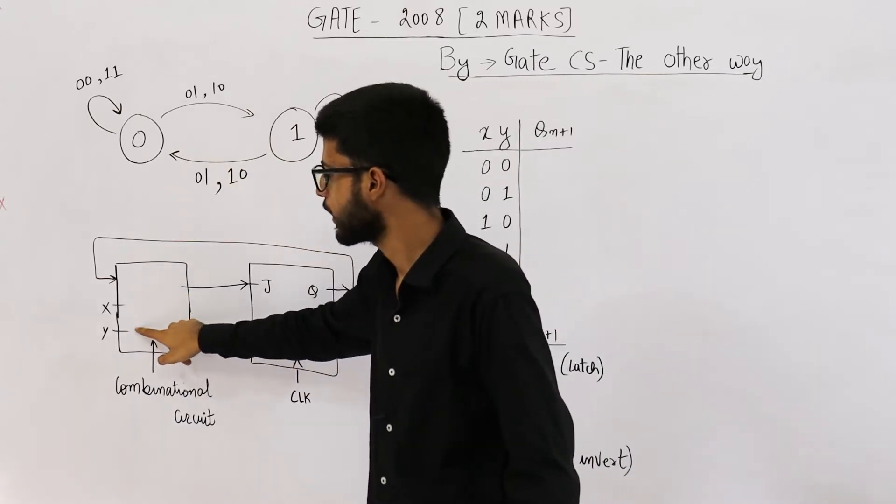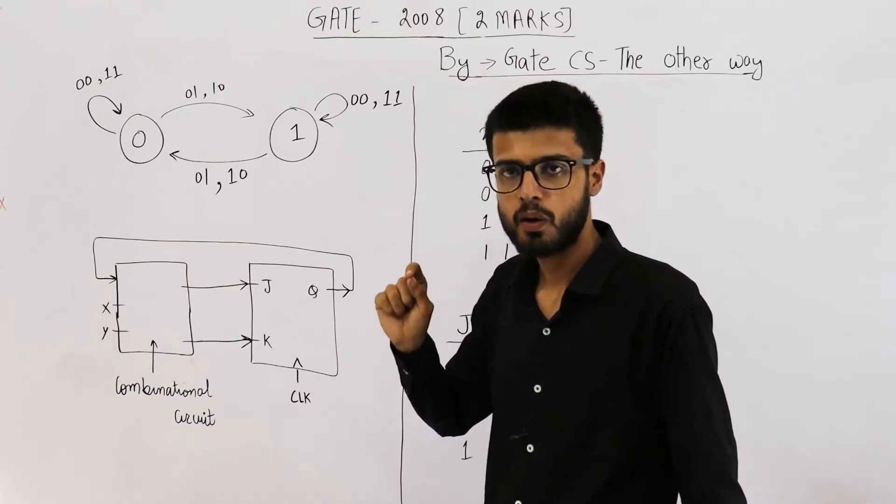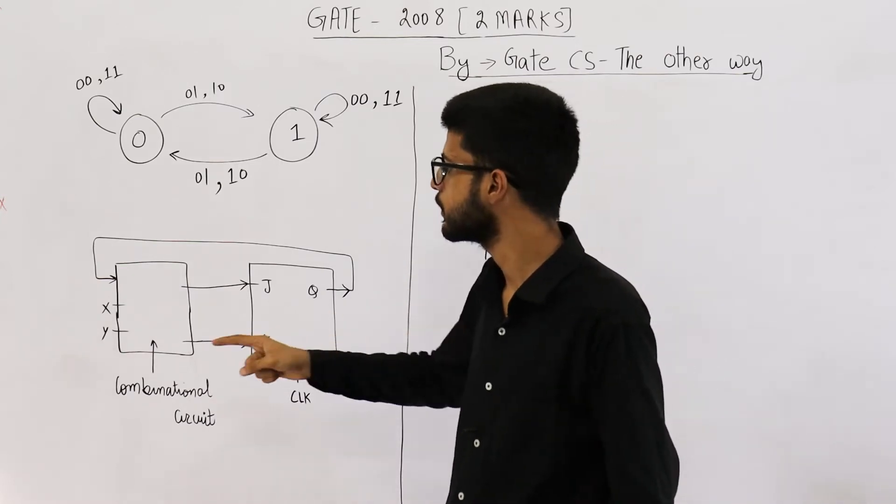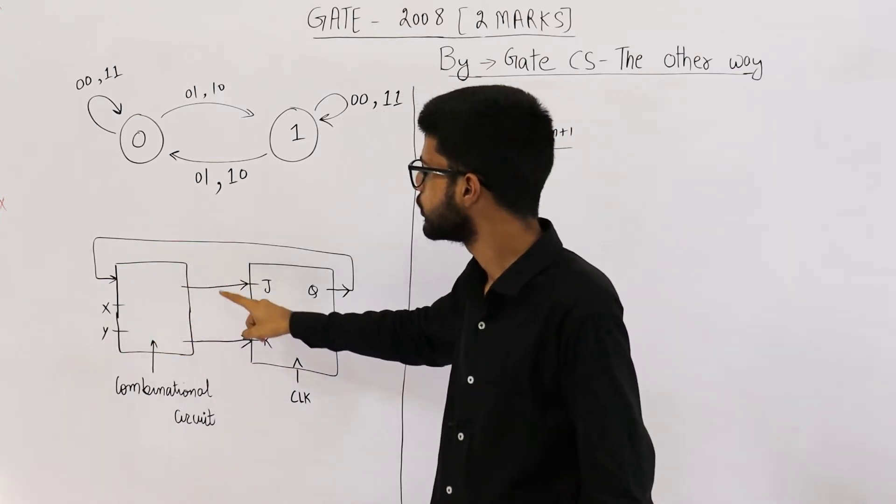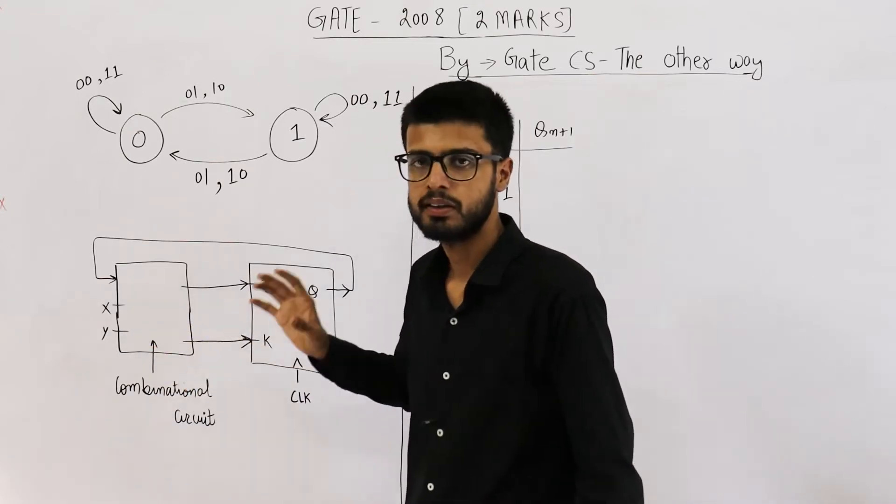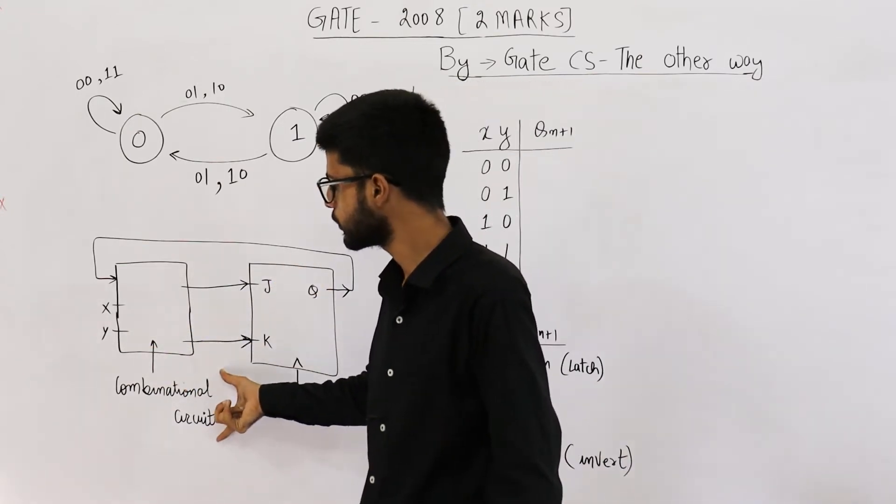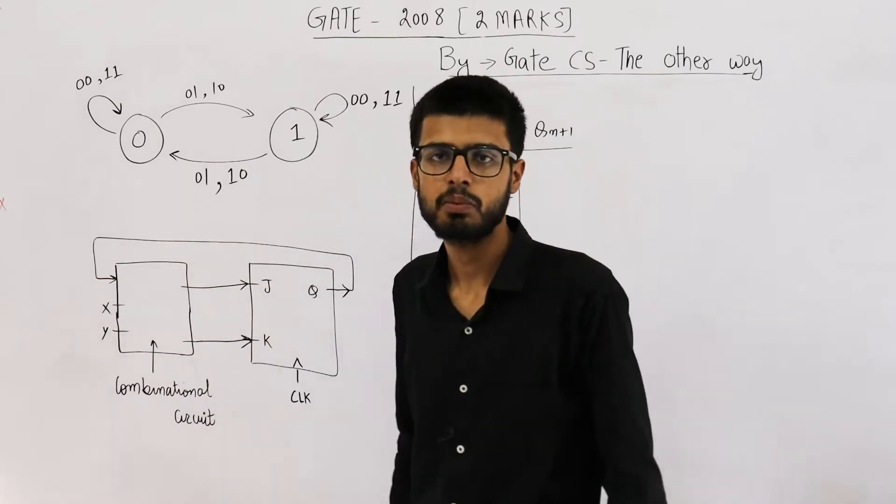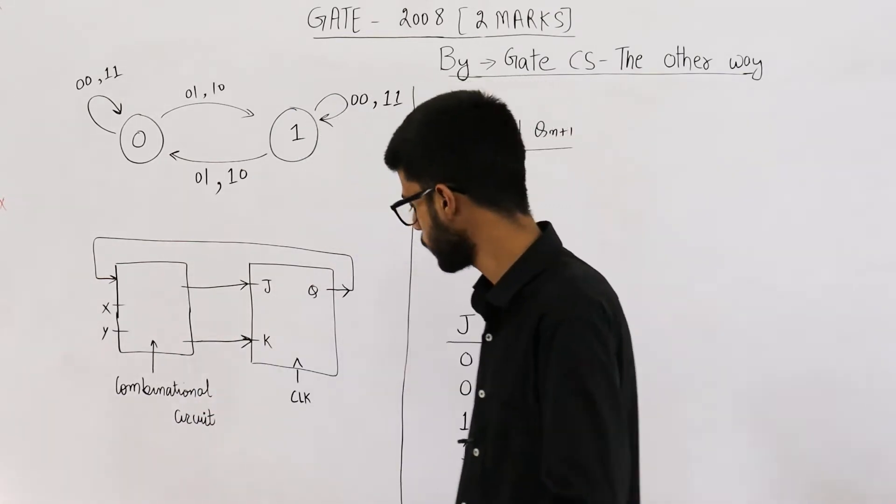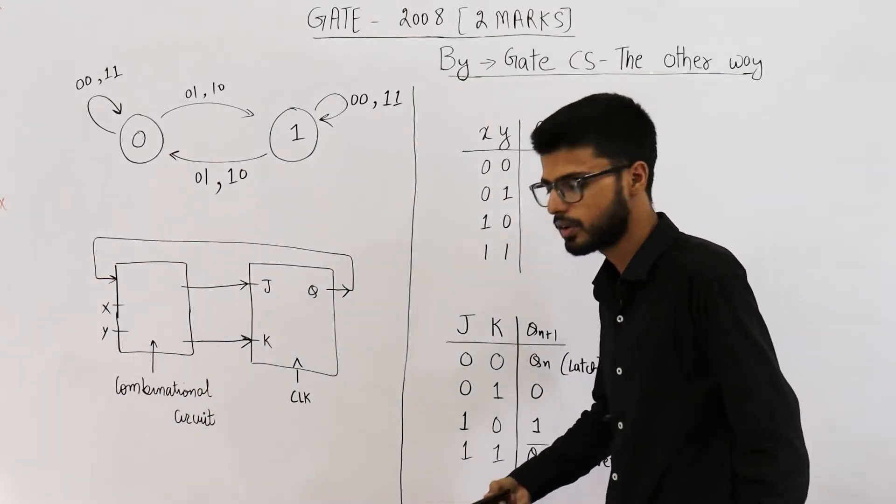That flip-flop's inputs are X and Y. So we must alter X and Y in such a way that we generate J and K from X and Y. That alteration will be done using some combinational circuit. We need to determine what is this circuit. Let us read the statement also.